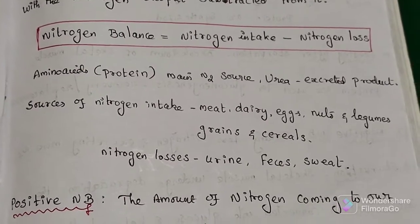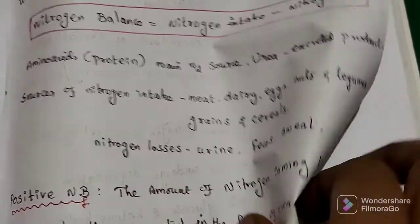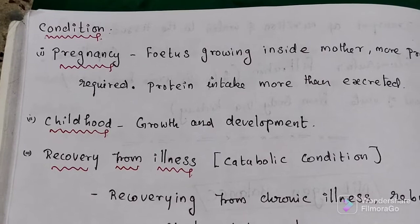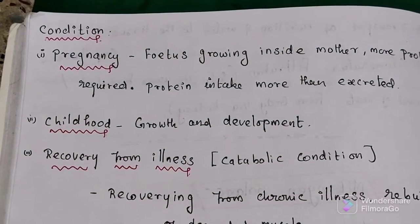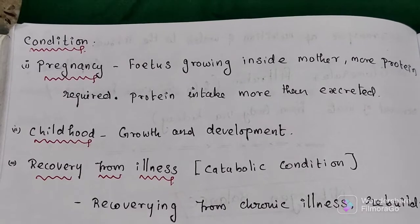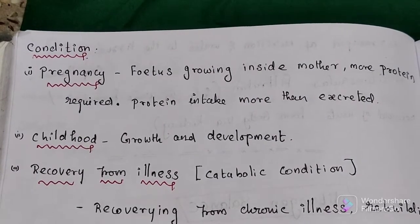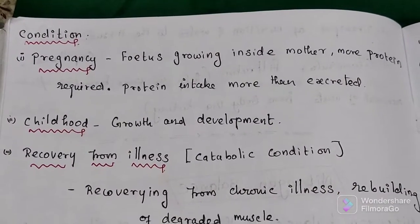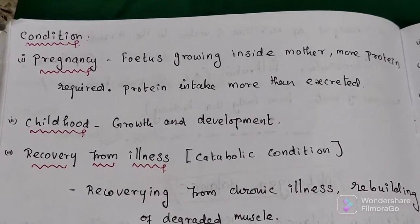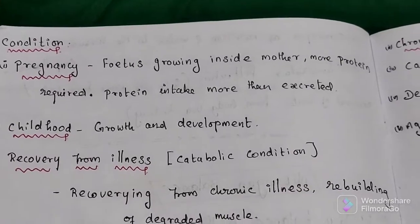Positive nitrogen balance occurs in several conditions. The first is during pregnancy — the fetus is growing inside the mother, more protein is required, and cells need to undergo multiplication, so there is a lot of protein demand. Protein intake is more than what is excreted. The second condition is childhood, where there is growth and development — new muscle formation and bone growth — so more protein is required.